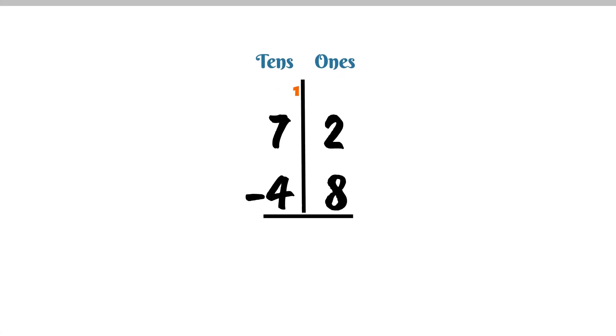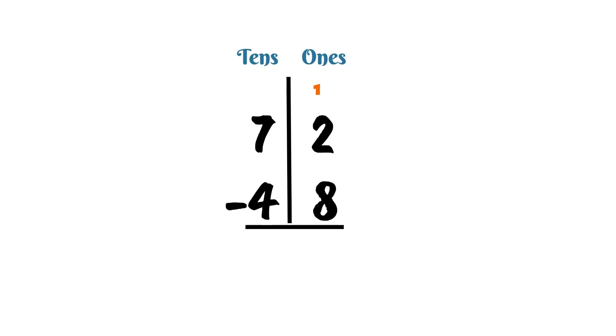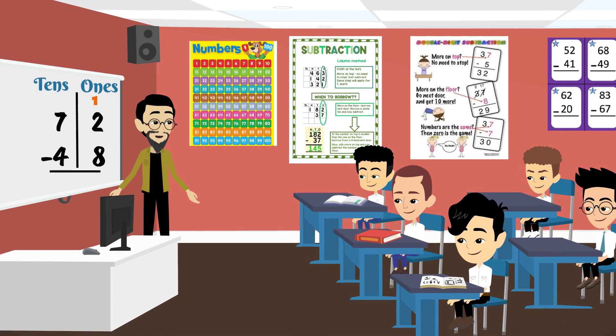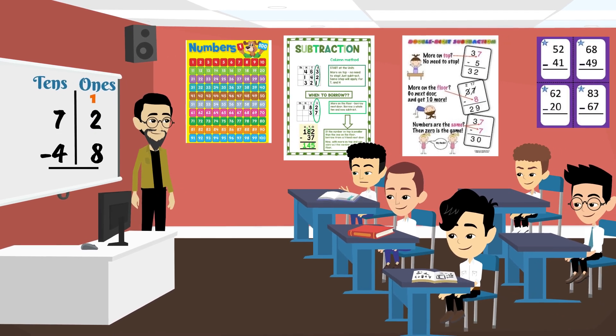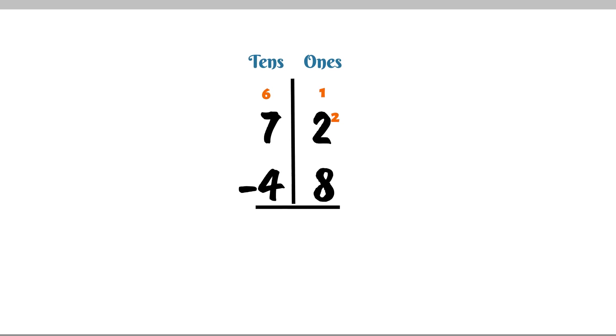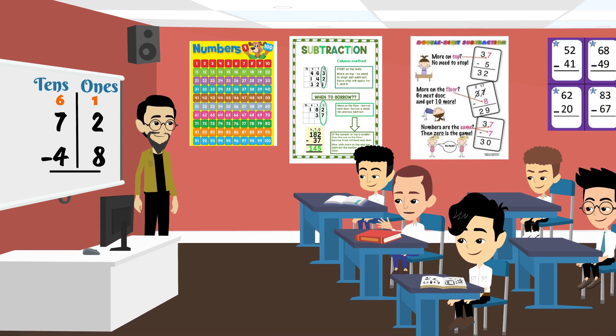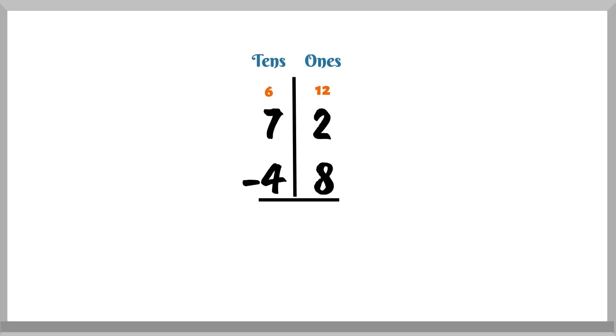So, we'll borrow from the 7 in the 10's place. What does that change the 7 to? It becomes 6. And what do we add to the 2 in the 1's place? We add 10. So, it becomes 12. Excellent.